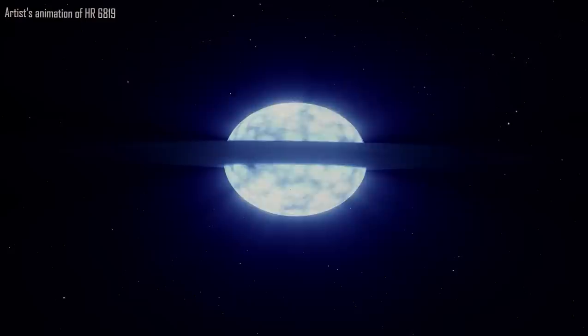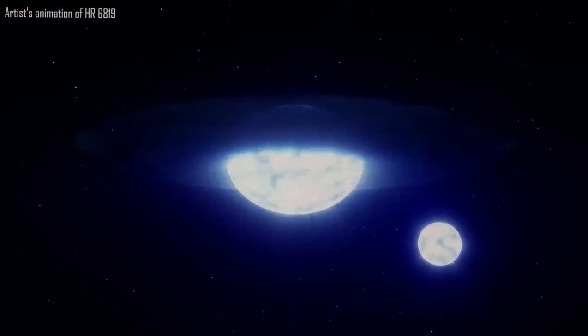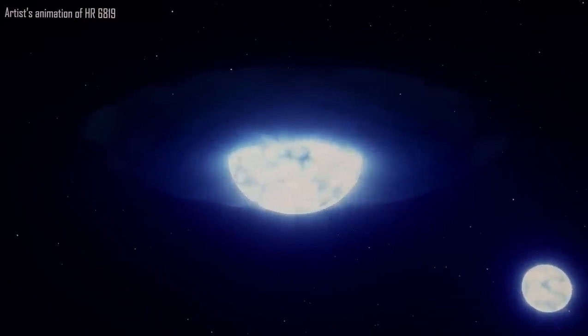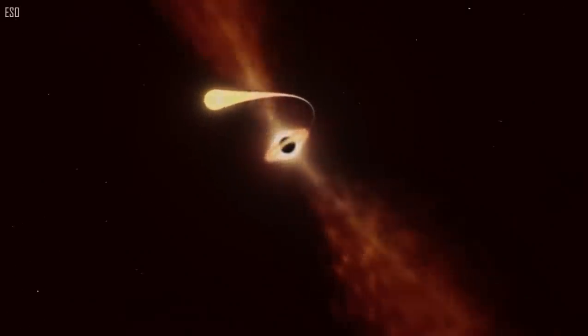Every 40 days, the inner star and the hidden object circle one another. The outer star gently orbits the pair farther away in the meantime. Astronomers assert that the invisible object can only be a black hole because it has a mass that is at least four times that of the sun.